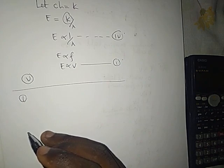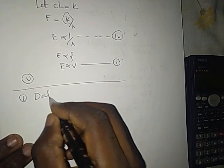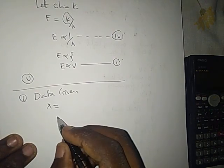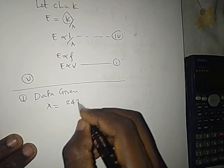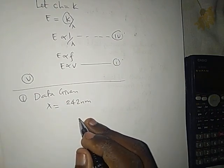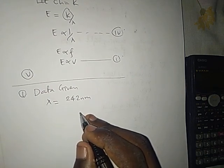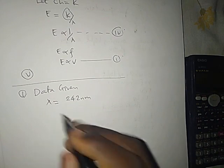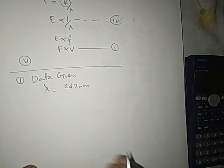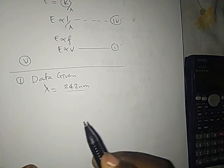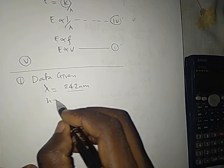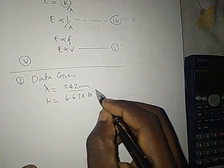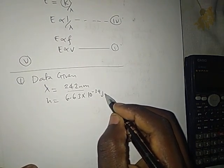Here is a question: electromagnetic radiation of a certain wavelength is just sufficient to ionize the sodium atom. Calculate the ionization energy of sodium in kilojoules per mole. Given: Planck's constant H is equal to 6.63 times 10 to the power negative 34 joule seconds.